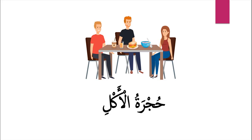حجرة الأقل means 'the dining room.' حجرة means room and الأقل means food, so literally it is 'room of food,' but in English we say 'the dining room.' In this course we will be discussing comprehension passages in Arabic with some grammatical analysis along the way. Any grammatical analysis you do not understand, refer back to our Arabic Grammar in 20 Days — all has been explained there.